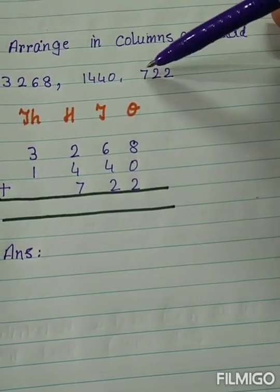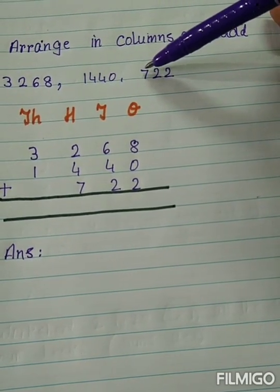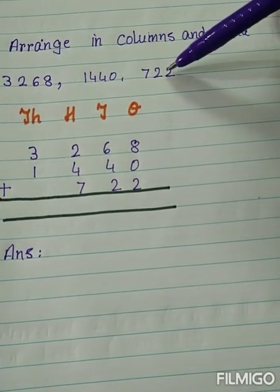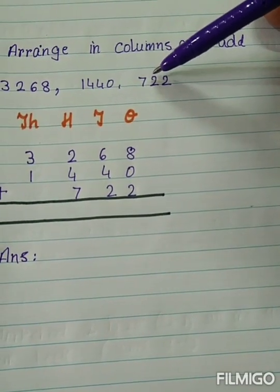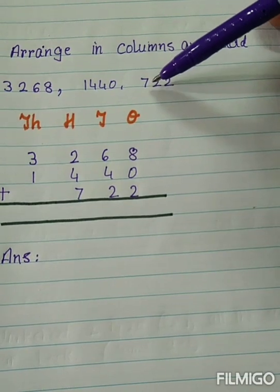And 722. Can you see the difference now? Here we had 4-digit numbers. Here we have only a 3-digit number. So we have to read the number, understand the number, and then place it according to their values.